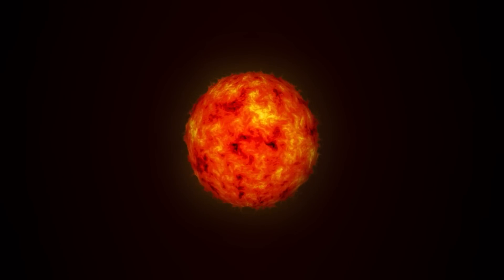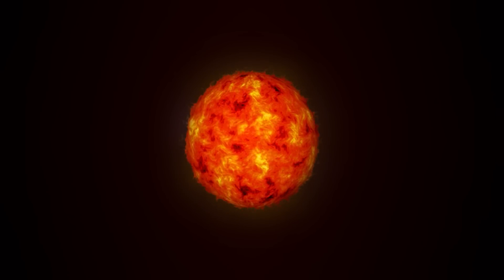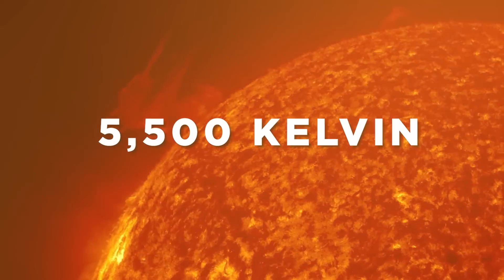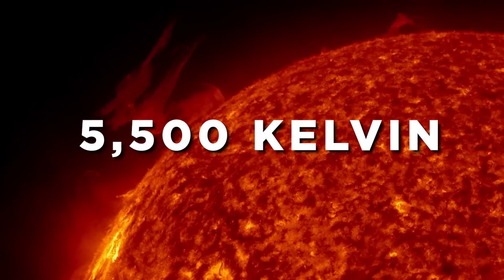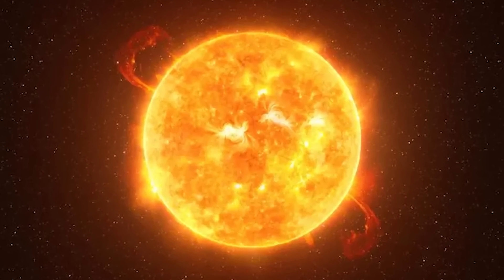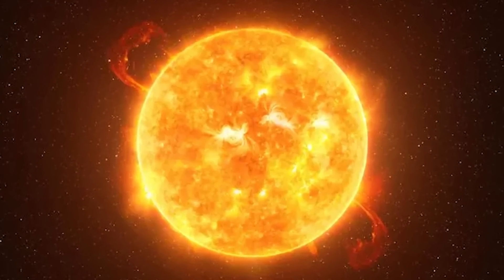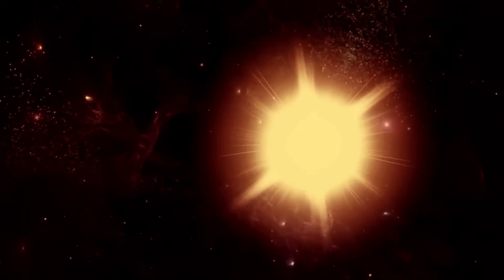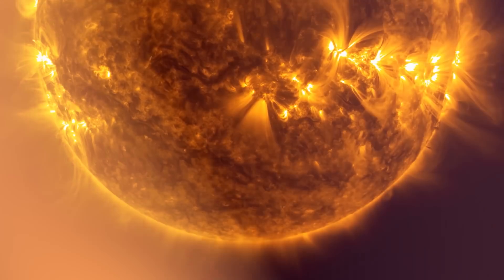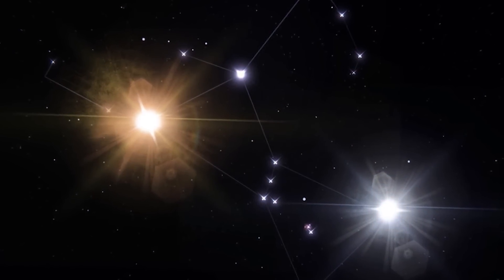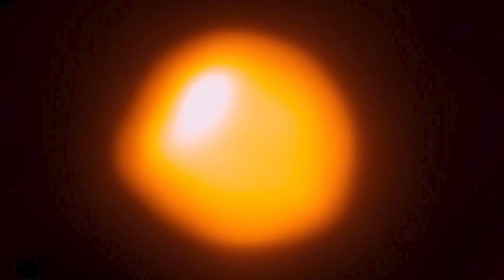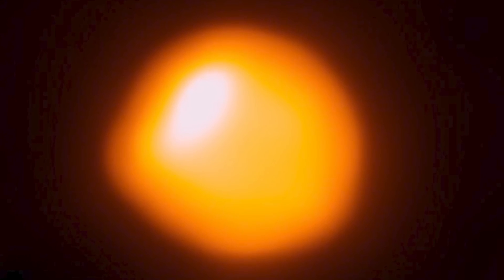Betelgeuse is a bright red star because its surface is very cool. Its temperature is only 3,500 Kelvin, which is much lower than the sun's temperature of 5,500 Kelvin. Because it is cooler than the sun, Betelgeuse gives off much less energy per unit of surface area. This is why, even though it is one of the biggest stars we know of, it looks much fainter. It's like a big person who doesn't need to show off their size to feel important. Just because Betelgeuse seems calm, doesn't mean it's not a super giant star.